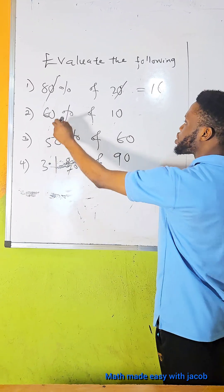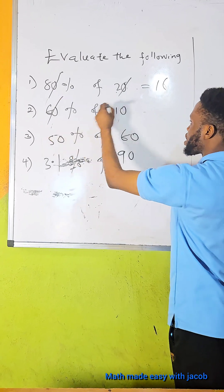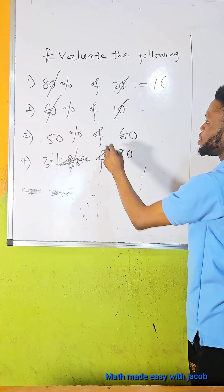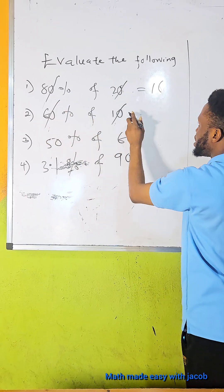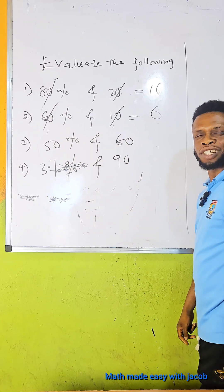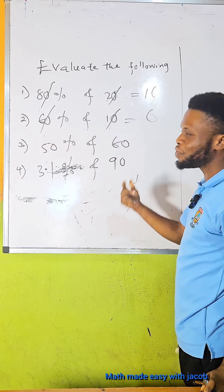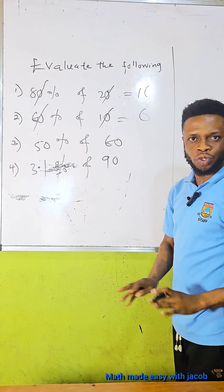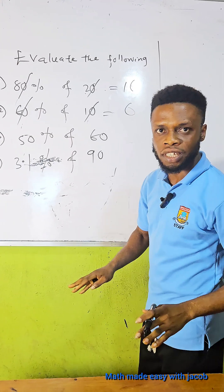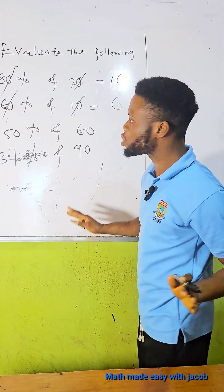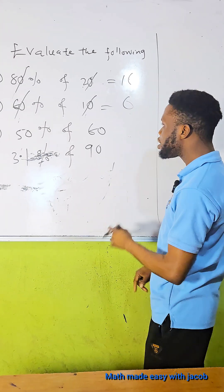In the next question, zero can cancel zero. Six times one is what? Six. Please, as a student, don't you love this? Straightforward, easy, and there is no stress.